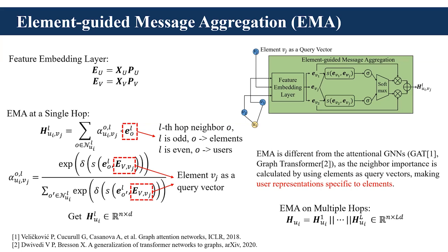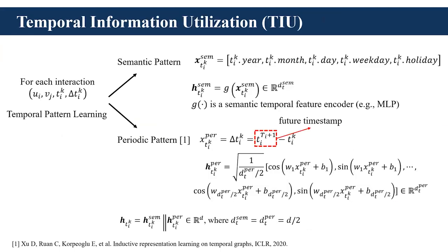By utilizing all elements as query vectors to aggregate neighbor information, the representation of user UI at each hop is obtained. We also aggregate messages on multiple hops to encode the collaborative signals, and the final representation of UI is derived by the concatenation operation. We further design a temporal information utilization component to capture both the semantic and periodic patterns reflecting user sequential behaviors. For each interaction with absolute time and relative time, we first extract its semantic temporal feature and use an encoder to encode the semantic pattern.